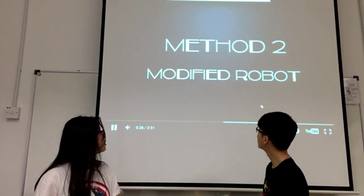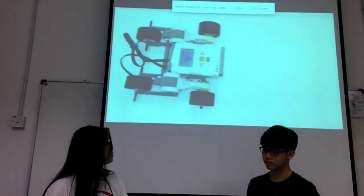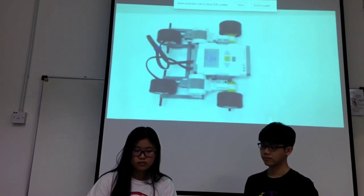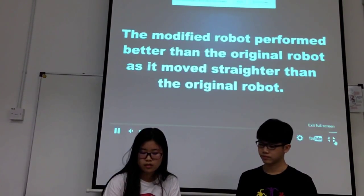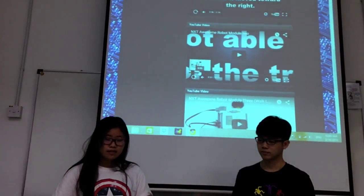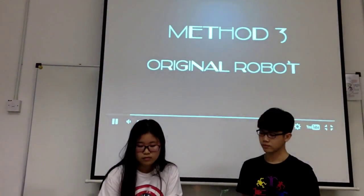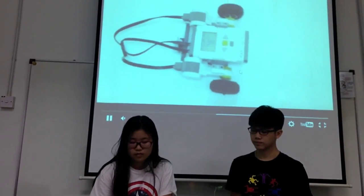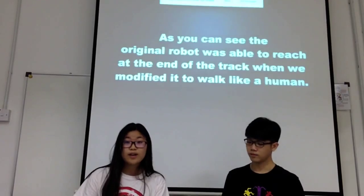And this one is the modified robot. As you can see, it moves — this one is shorter than the original robot. While we modify the software system, this is the method tool of changing the software system to modify it to work like a human.